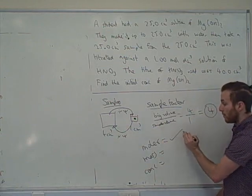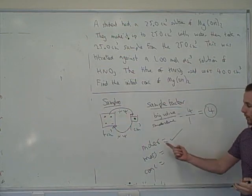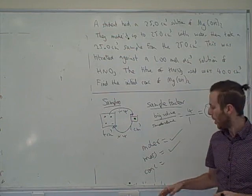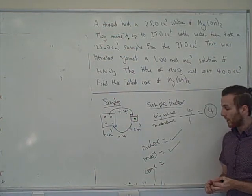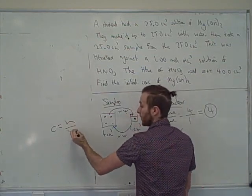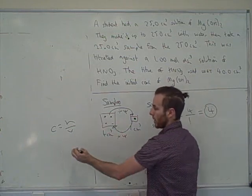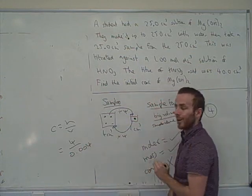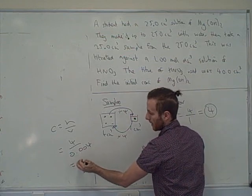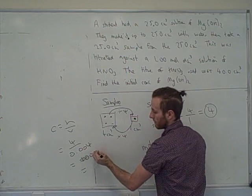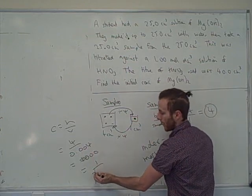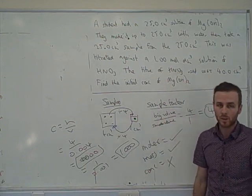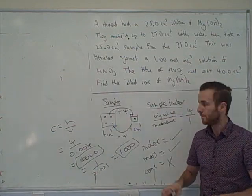Your number of moles will change if you do a sample — I've gone from 4 to 1. If moles change, mass changes too: fewer moles means less mass. But will concentration change with a sample? No — concentration equals moles divided by volume. Whether it's 4 moles over 0.004 dm³ or 1 mole over 0.001 dm³, both give a concentration of 1000. So concentration stays the same with samples.